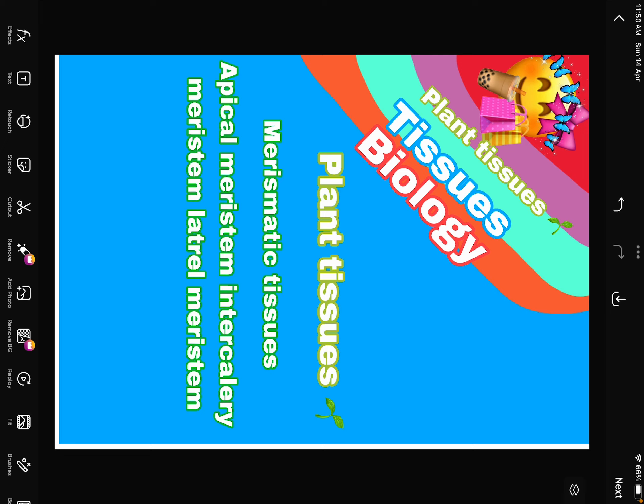They are called meristem tissue because when they grow up they will have a wedding - marry the stem! Yeah, I'm just joking. Meristem is a Greek word which means 'divideable.' So these tissues are not gonna marry the stem when they grow up - meristem actually means divideable.